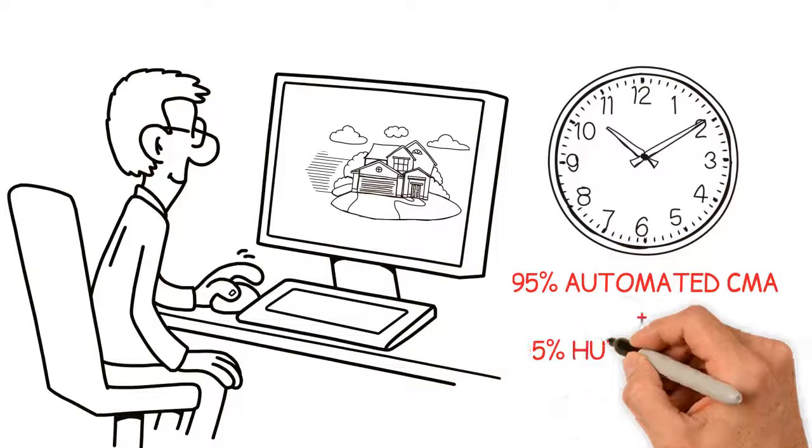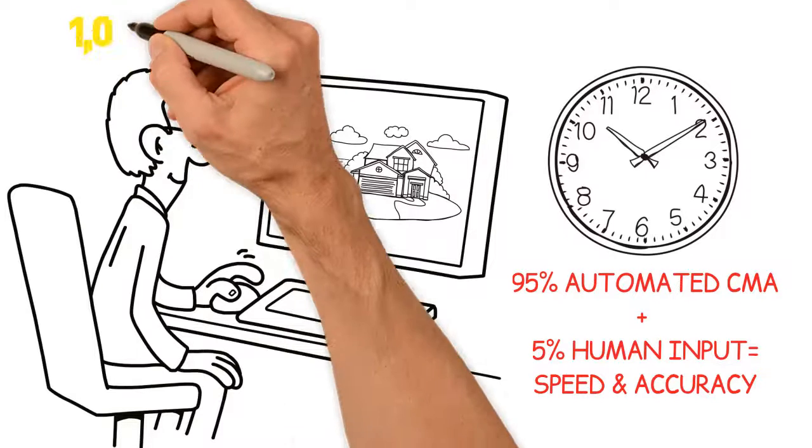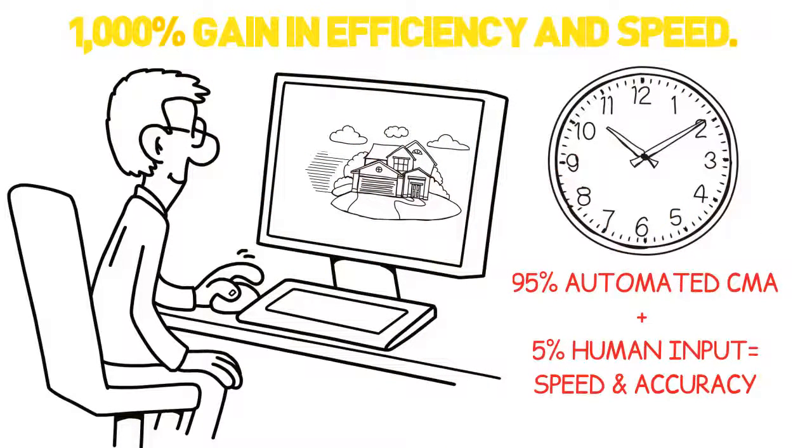MLS DealFinder's system reduces the time required to run an accurate CMA down to minutes. This results in a nearly 1,000% gain in efficiency and speed.